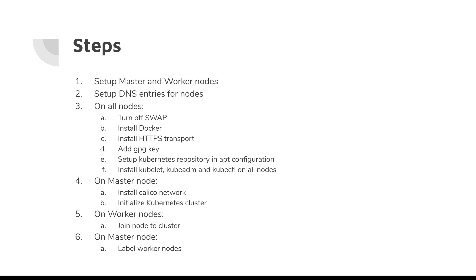Finally, install kubelet, kubeadm, and kubectl on all nodes — master and worker nodes. On the master node you need to install the Calico network so that communication can be established between worker nodes and the master node, and then initialize the Kubernetes cluster. Once the cluster is initialized successfully, it will be up and running with only the master node. You then switch over to the worker nodes and use the kubeadm join command to join them to the cluster.